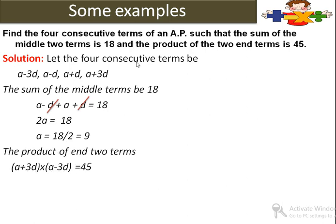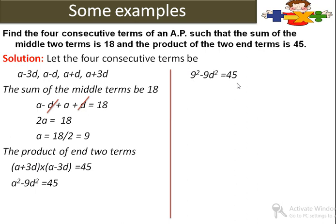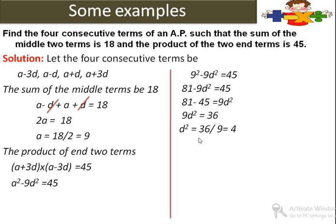And the product of the end two terms is 45. End terms हैं a minus 3d और a plus 3d. हम formula a plus b into a minus b = a square minus b square लगाएंगे. So a square minus 9d square equals 45. a की value 9 put करें: 9 square minus 9d square equals 45. 81 minus 9d square equals 45. 9d square equals 81 minus 45 equals 36. d square equals 36 upon 9 equals 4. So d equals 2.